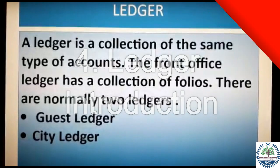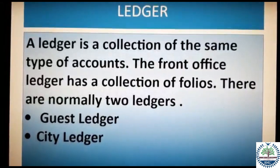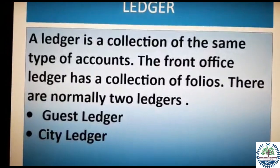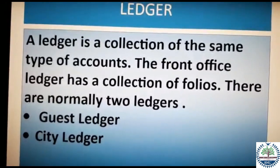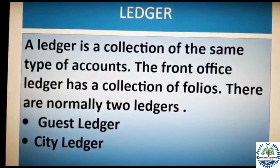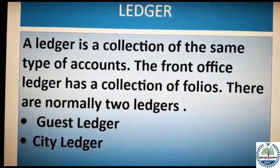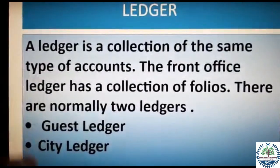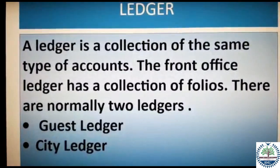Moving on to ledgers — a ledger is a collection of the same type of accounts. The front office ledger is a collection of folios. There are normally two types: the guest ledger and the city ledger.